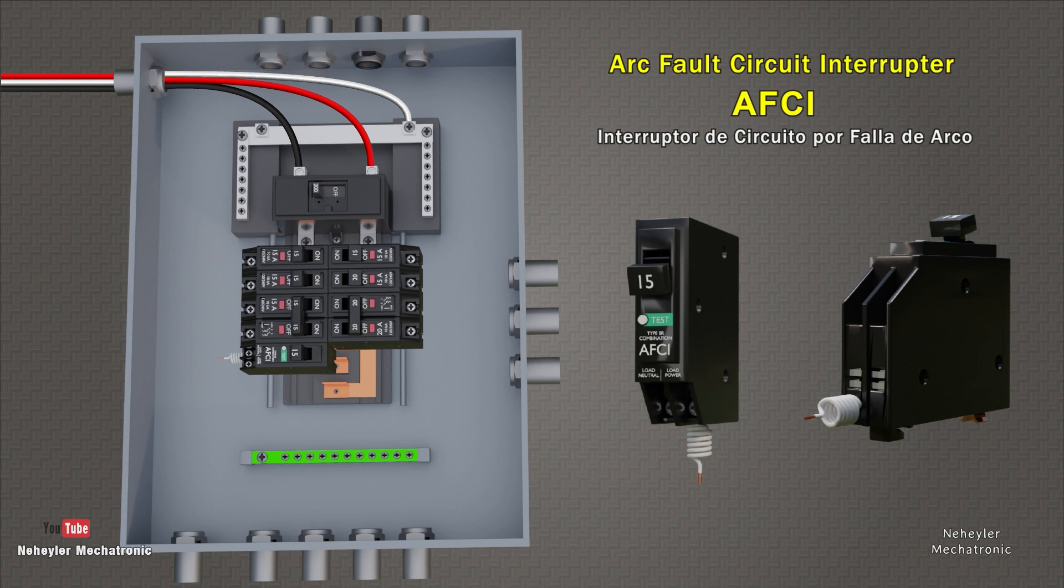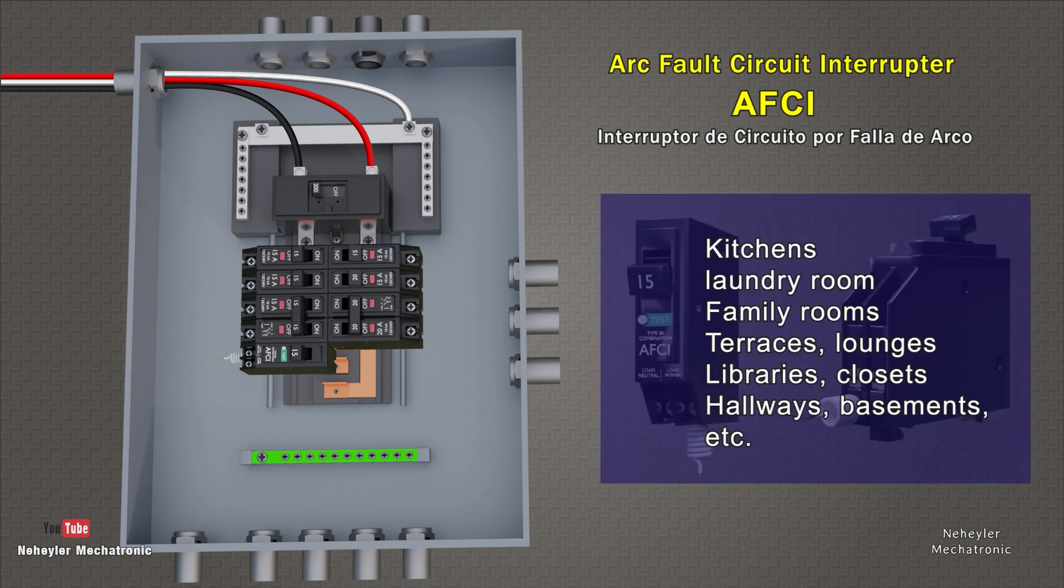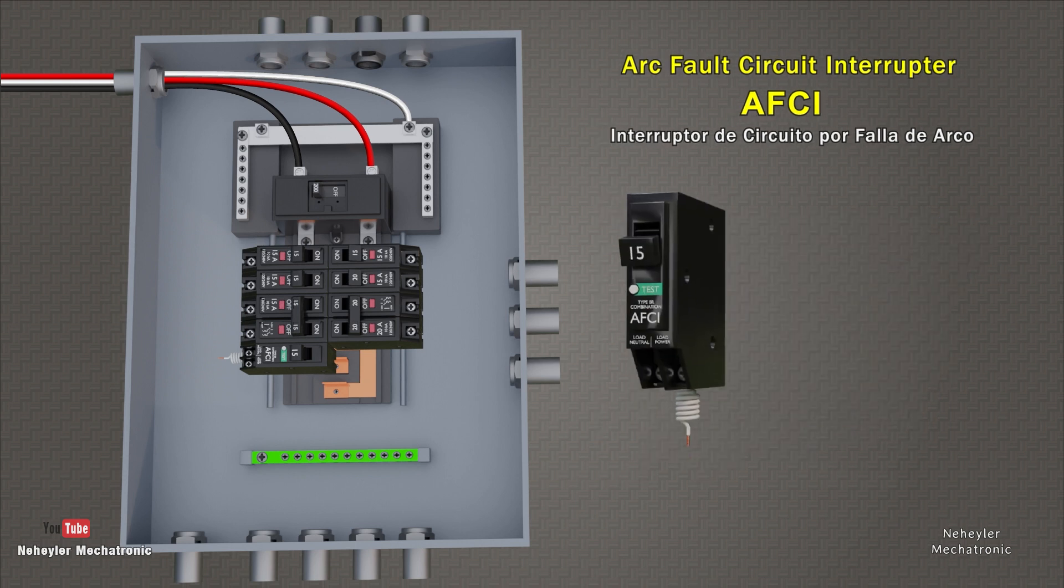On the front there is a test button for manual testing to confirm that the device works correctly. To this device, it is necessary to connect the neutral through the white cable. Also, it has two output terminals or terminals, where it indicates which side the neutral output cable and the hotline output cable should go. An explanation of the connection on the electrical panel will be seen shortly. According to the current National Electricity Code, it indicates that these devices should be used as protections in kitchens, laundry rooms, family rooms, terraces, living rooms, etc.